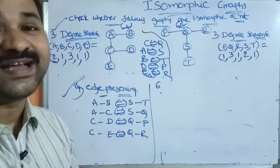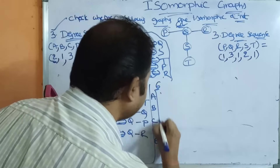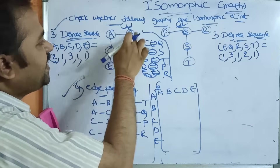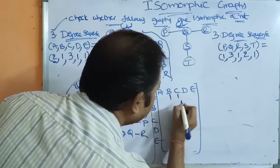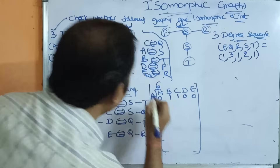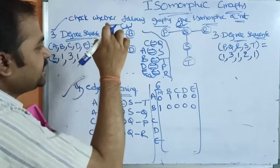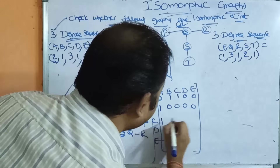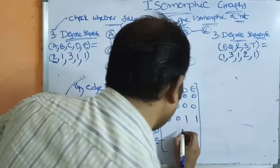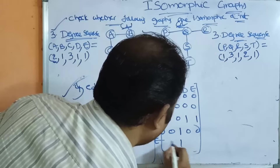The last condition is the adjacency matrix. For graph one with vertices A, B, C, D, E: from A there are edges to B and C, so row A has 1s at B and C. From B there is an edge to A only. From C there are edges to A, D, and E. From D there is an edge to C. From E there is an edge to C. Remaining values are zero.